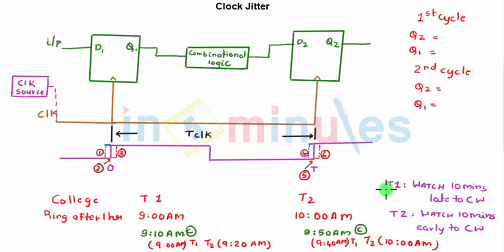Teacher one has her watch which is 10 minutes late compared to the college watch and teacher two has a watch which is 10 minutes early compared to the college watch. Ideally when the bell was ringing, teacher one was entering at 9 a.m. and after one hour when the bell would have gone, teacher two would have entered at 10 a.m.